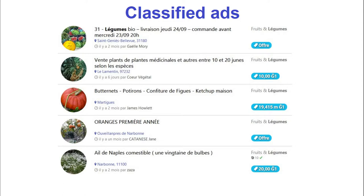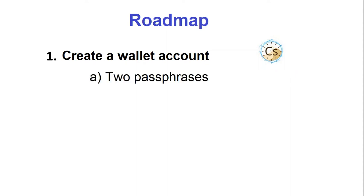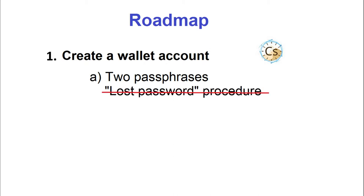There are several e-marketplaces including one with a fruit and vegetables section. To proceed, you first create a wallet account by installing the Cesium software on your computer. You will need two carefully chosen and memorized passphrases: one will be your secret identifier and the other your password. Please note that the system does not have a lost password procedure.